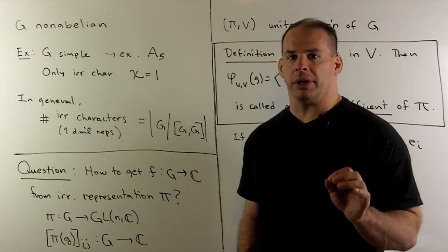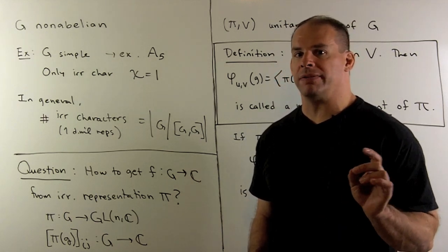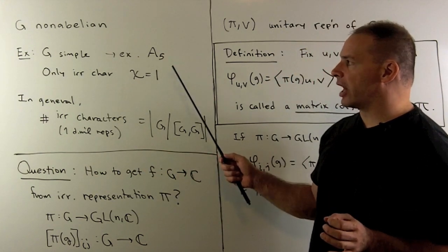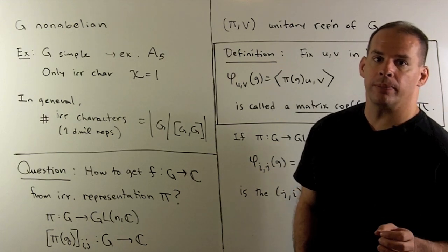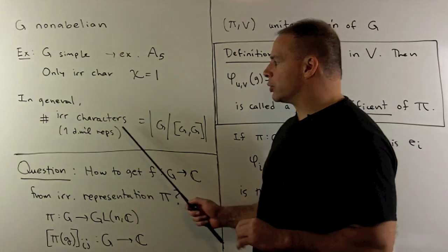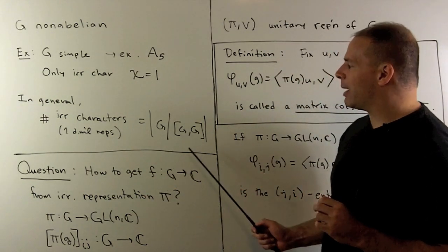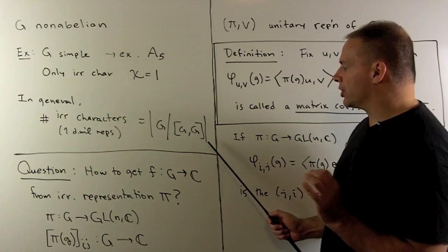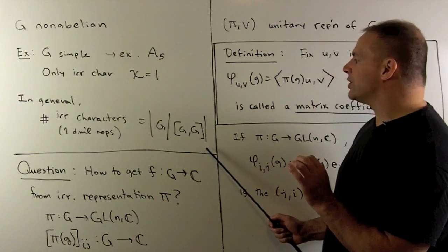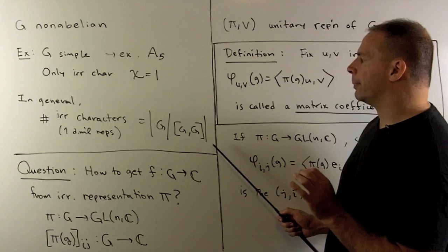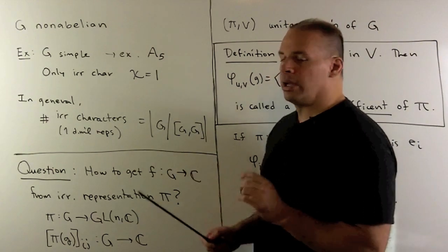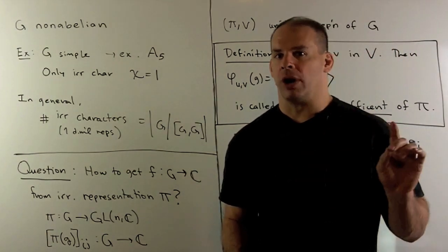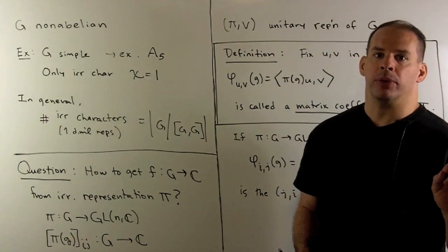We could try the same approach when G is non-abelian, but there aren't enough irreducible characters to describe every function on G. For instance, if G is simple and non-abelian — such as the alternating group on five letters — then the only irreducible character is the trivial one. In general, the number of irreducible characters equals the order of G mod the commutator subgroup of G. If G is simple and non-abelian, the commutator subgroup is a normal subgroup equal to G, leaving only the trivial character. So the question is: if we have irreducible representations with dimension greater than one, how do we get functions from them?